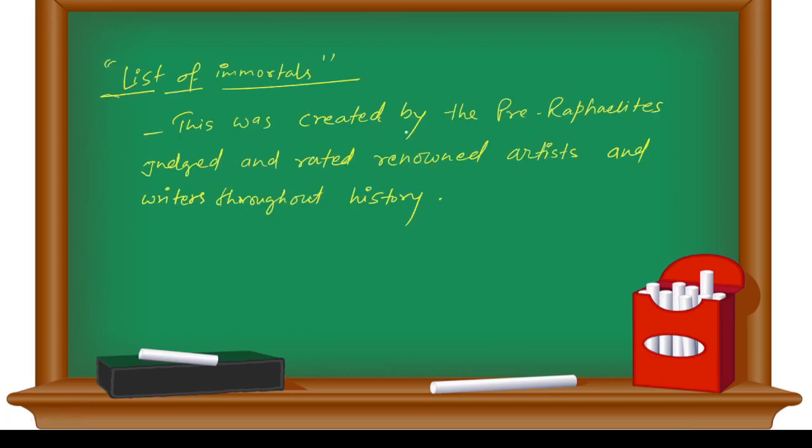List of Immortals: This was created by the Pre-Raphaelites. They judged and rated renowned artists and writers throughout history. This can be in your question—what was the List of Immortals? It was a list created by Pre-Raphaelite Brotherhood poets.